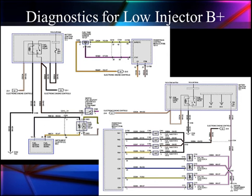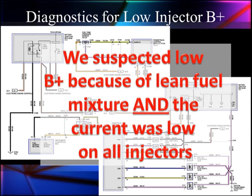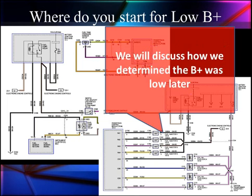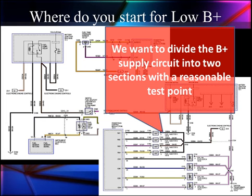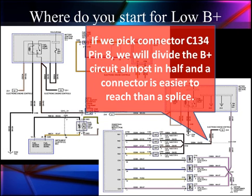We need to diagnose this low B-plus to our injectors. We suspected low B-plus because of lean fuel mixture, and the current showed low injector current. To diagnose it, we want to divide this circuit in half, just like we did with those light bulbs. If we pick connector C134, pin 8 — that's where B-plus comes in — this is going to divide the system in half. We've got splices of stuff before and after it, like we saw in our drawing.